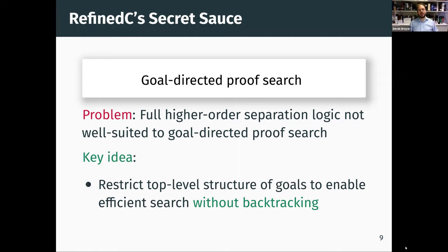So what do we do about that? The key idea is that we simplify the problem by restricting the top-level structure of the goals we consider, so that at least at the top level we can enable efficient search without any need for backtracking. At the same time, inside the model of RefinedC types, we allow arbitrary use of Iris propositions, but those are beneath the layer of the top-level structure.